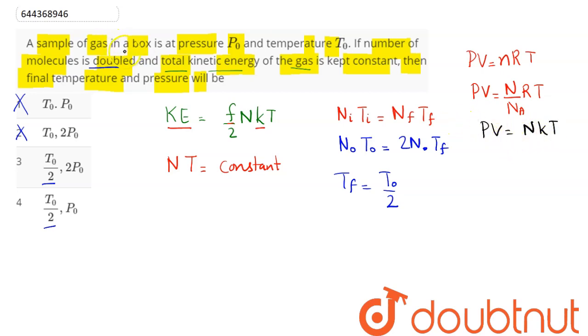we know, since it is contained in a box, volume will remain constant. As NT remains constant and k remains constant, pressure will also remain